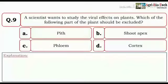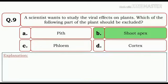Next question. A scientist wants to study the viral effect on plants. Which of the following part of the plant should be excluded? And the given options are: root tip, shoot apex, cambium, and cortex. So here the correct answer would be shoot apex.